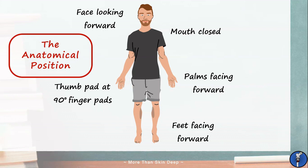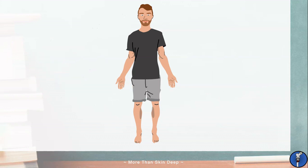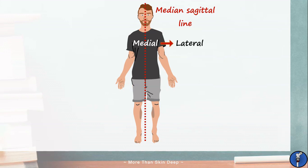Now let's start by putting this newly defined anatomical position to use. We'll begin by drawing a line down the centre of Greg's body, dividing him into equal right and left halves. This is known as the median sagittal line, and it will be our first point of reference when describing the location of anatomical structures. Anything that sits closer to this line is described as being medial, and anything that sits further from this line is described as being lateral.